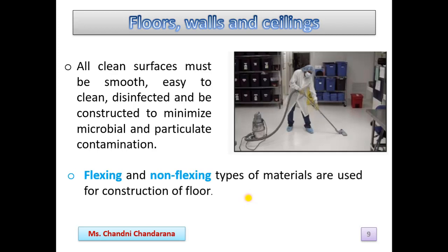Now we will see the floors, walls, and ceilings — how they should be in the production area. All clean surfaces such as floors, walls, and ceilings must be smooth, easy to clean, disinfected, and constructed to minimize the microbial and particulate contamination. This is a very important requirement because all processing should be aseptic for parenteral preparation.